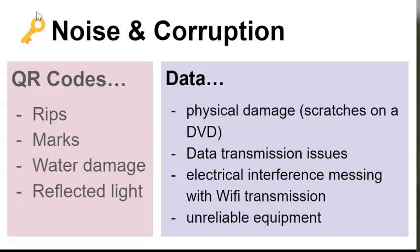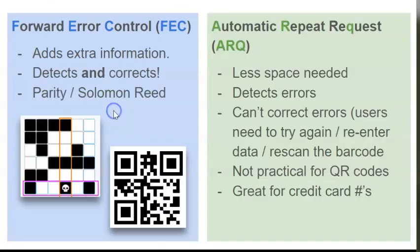In a broader context, it's possible for data to be corrupted through physical damage, such as a scratch on a DVD, data transmission issues, electrical interference messing with Wi-Fi transmissions, and unreliable equipment. A reminder that the goal of error control is to detect errors so that we are always working with accurate information. If it can correct the errors as well, that's an added bonus.